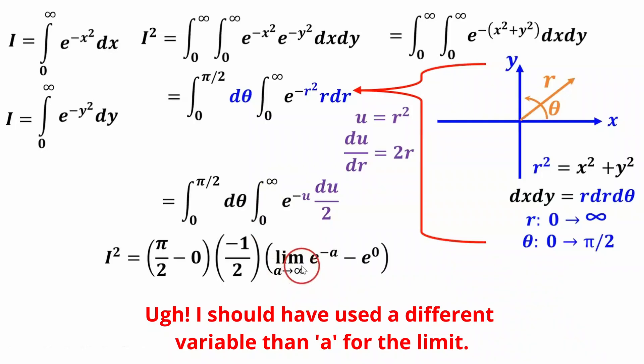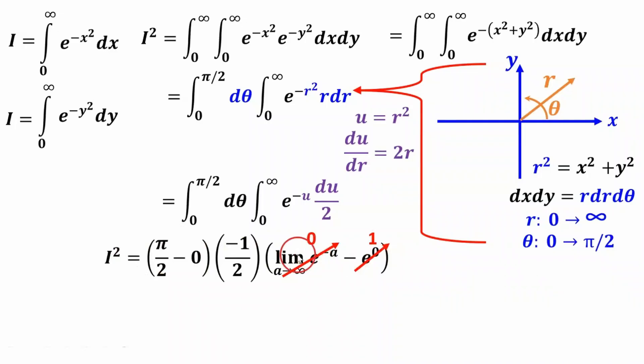So we'll just plug in using these limits right here because we can't plug in infinity. So we have to write it as a limit. This limit term becomes zero as a goes to infinity. And this right term becomes one. So this whole thing simplifies totally down.